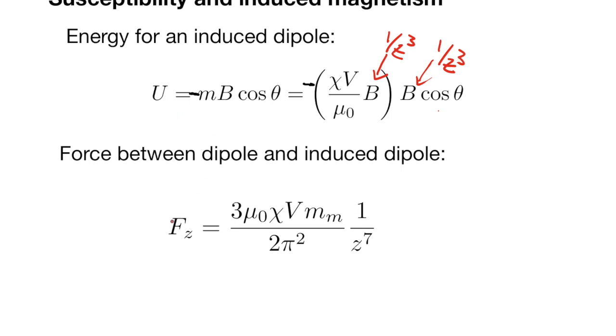To figure out the force then, we just take the gradient again. So we take the derivative of this one over z cubed times one over z cubed, which turns out to be one over z to the sixth. And so that shows up here and is the scaling that we actually want to measure in this lab. So that's not an exponent you really see every day.